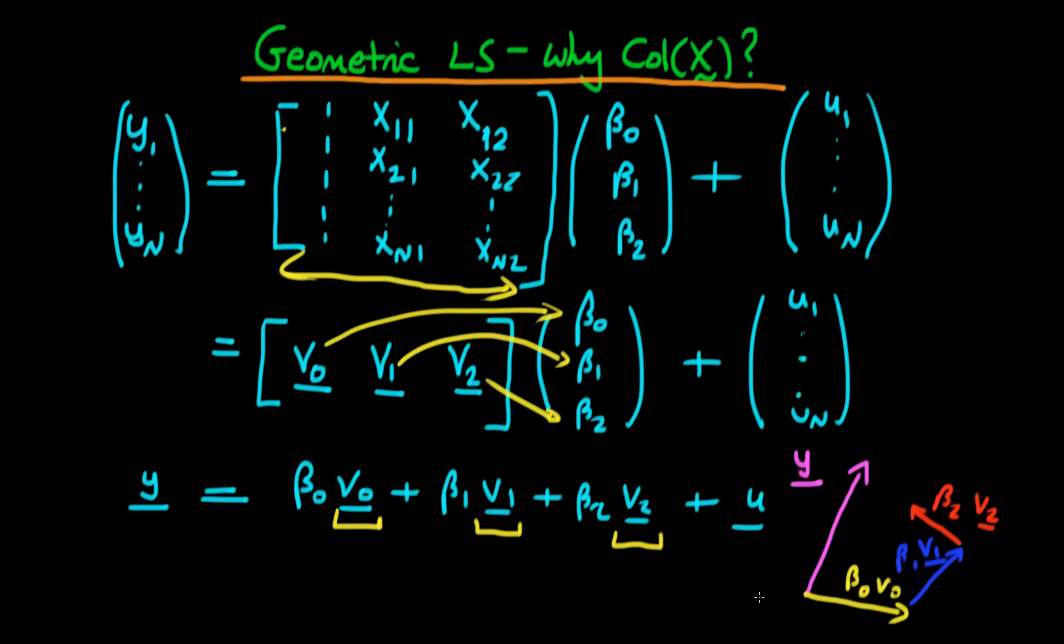And the idea is that this particular space, which is spanned by these three vectors, represents a kind of vector space. And if I illustrate that here by some sort of plane, then the idea is that after I've followed this vector through to here, then the error vector U should actually be orthogonal. I haven't drawn it very well here, but it should actually be orthogonal to the plane.